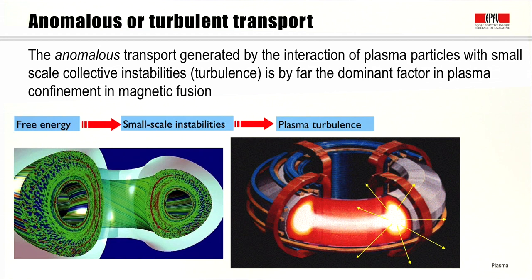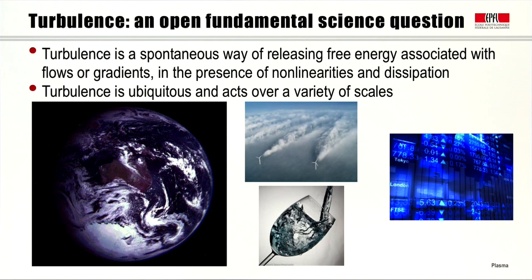The answer to the question of what underlying mechanism makes transport so much more effective than Coulomb collisions would is turbulence. The transport resulting from turbulence is referred to as anomalous transport, to indicate it is not a collisional effect. It is generated by the interaction of plasma particles with small-scale collective instabilities — which is what turbulence is — and is by far the dominant factor in plasma confinement for magnetic fusion. Turbulence is generated by instabilities that tap the free energy present in plasma gradients.